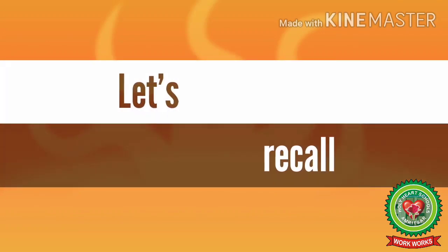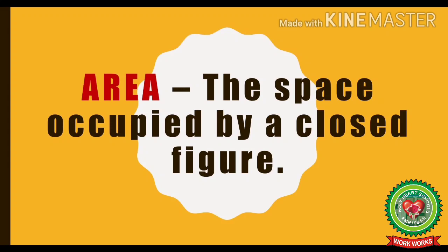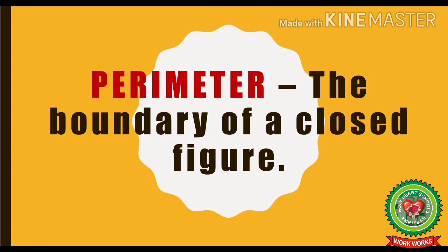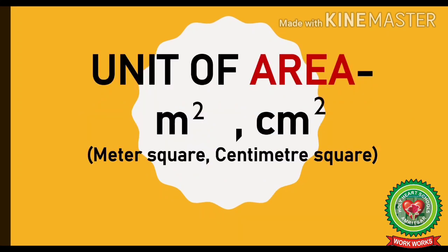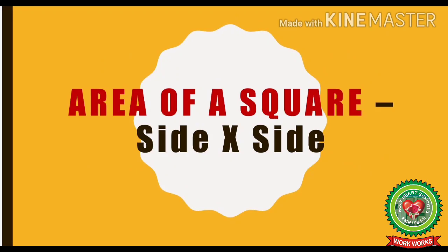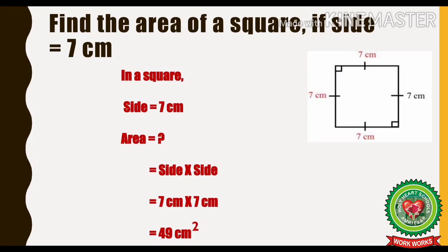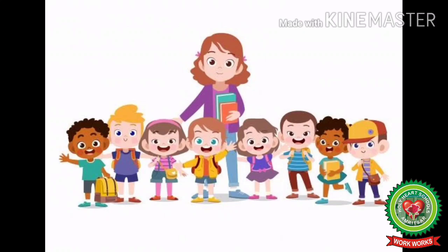Let us recall what we have learnt today. Area is the space occupied by a closed figure, and perimeter is the boundary of a closed figure. The unit of area is metre square or centimetre square. The formula to find the area of a square is side × side. I hope you have understood how to find the area of a square. Next class we will learn how to find the perimeter of a square. Till then, do the homework given to you in your Snap Homework. Thank you.